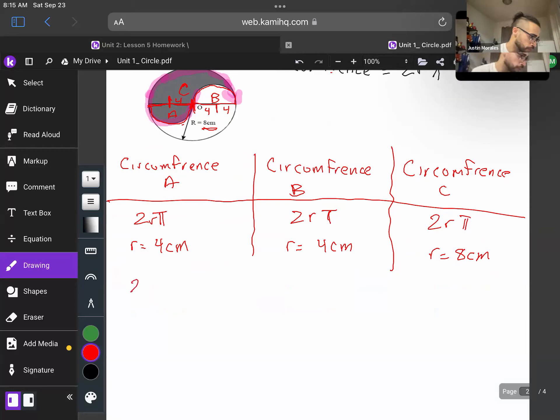So now that I've identified all the variables that I need for my formula, I'm now going to go ahead and plug them in. And then ultimately, I'm going to have the circumference for semicircle A and B is going to be 8π centimeters. And then for circumference C, semicircle C is just going to be 16π centimeters.